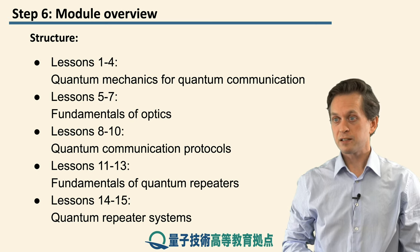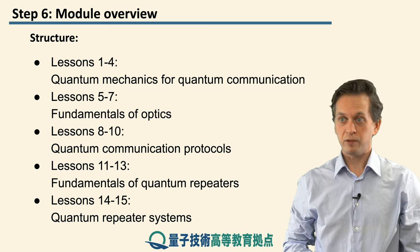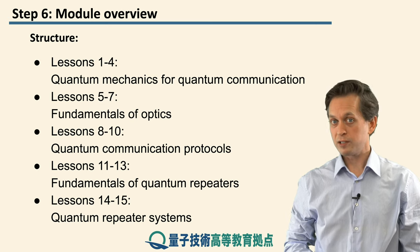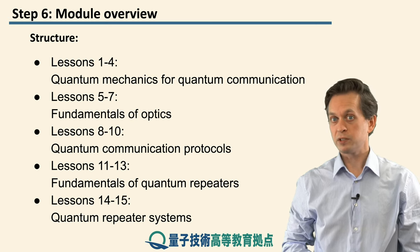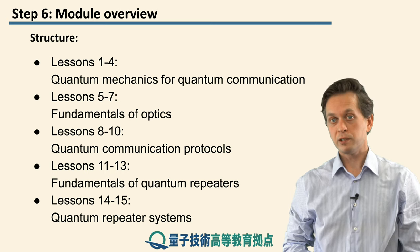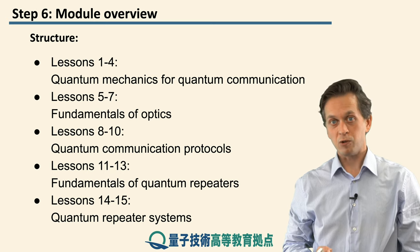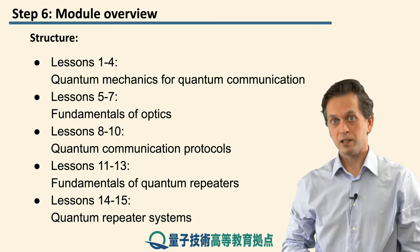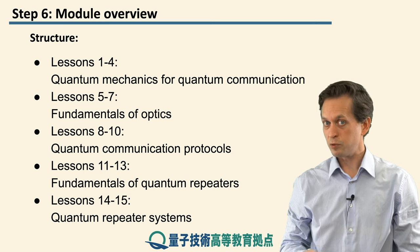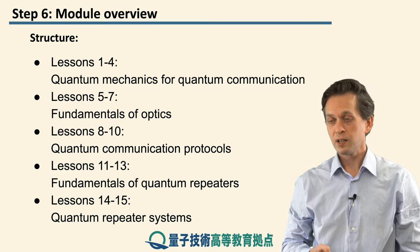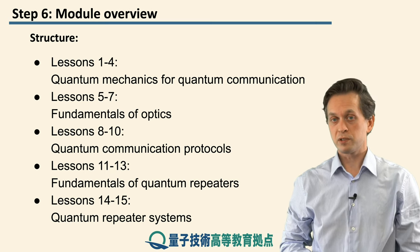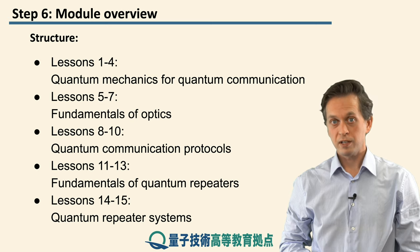In the next lessons, lessons 5 to 7, we will look at some optics fundamentals. We will particularly talk about how light is made, how classical light is made, how laser light is made, and how single photon light is made. And then we will consider interference and waveguides.